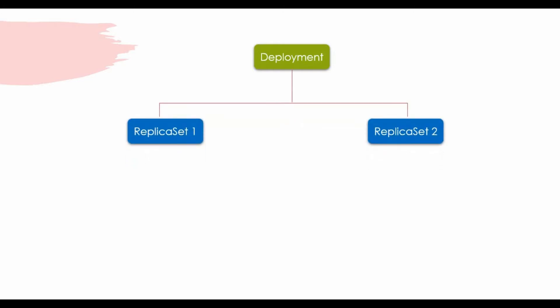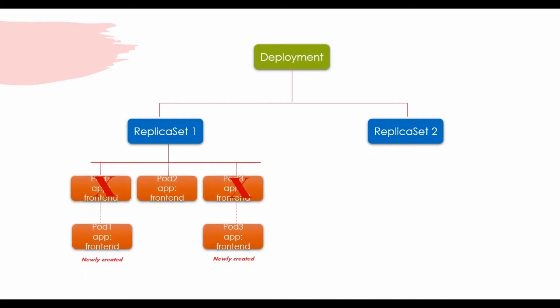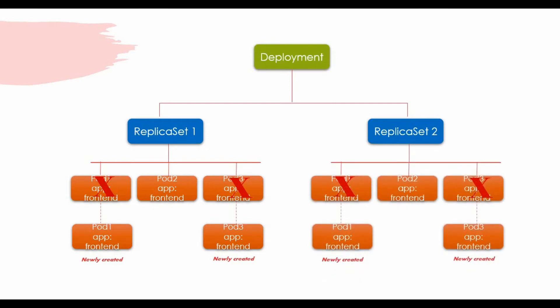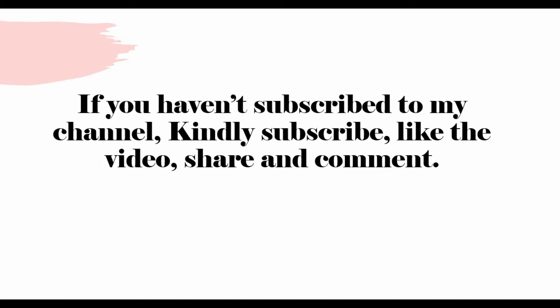Let me show a pictorial view of how deployment works. We write a deployment YAML manifest file. When you run the deployment, on the back end it creates a replica set. Inside the replica set you will have pods running, and inside the pod you have your application — whether it's nginx or Apache. If you kill some pods, it will automatically create new ones based on the desired state. Similarly, if you kill a replica set, it will recreate a new replica set based on the desired state defined in the deployment.